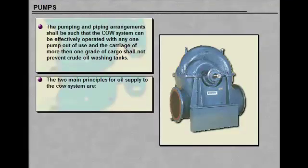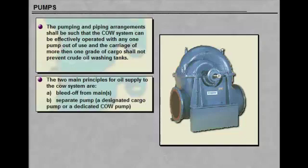The two main principles for oil supply to the crude oil washing system are: A, bleed off from the mains, and B, separate pump, a designated cargo pump or a dedicated crude oil washing pump.